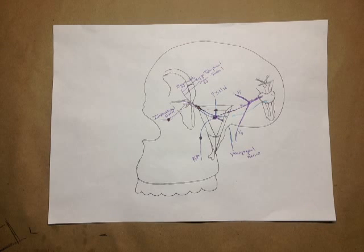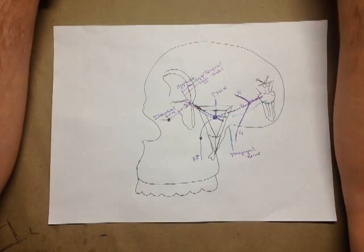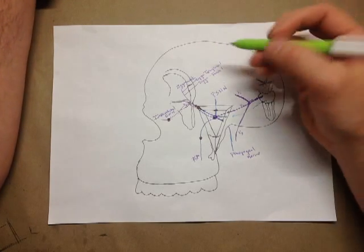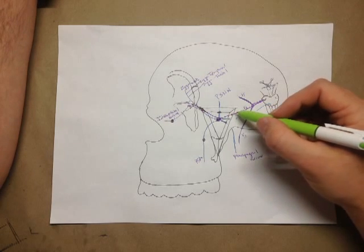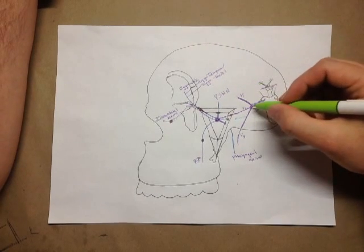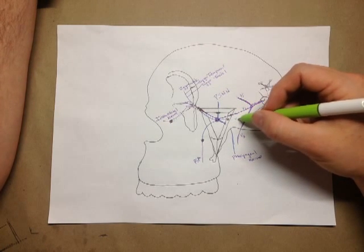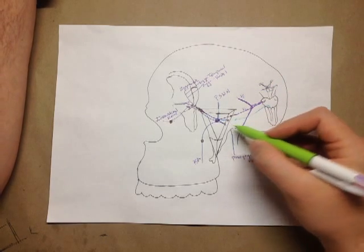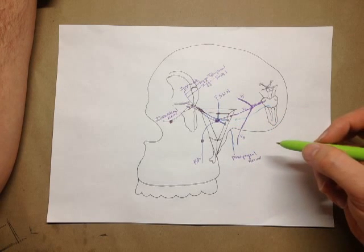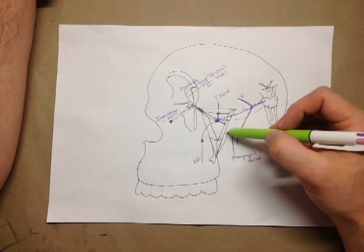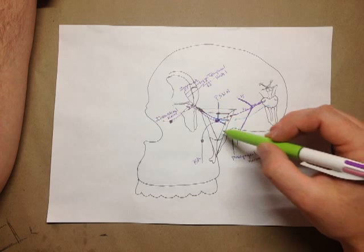That's basically all the nerves of the pterygopalatine fossa. The arteries are easy — they're named for the nerve that runs through them. Through the foramen rotundum, only V2 passes, so there's no artery and consequently no postganglionic sympathetic fibers. Through the pterygoid canal you have the artery of the pterygoid canal, through the pharyngeal canal you have the pharyngeal artery. The maxillary artery comes up and ends here — it branches after coming through the pterygomaxillary fissure.